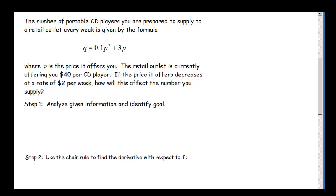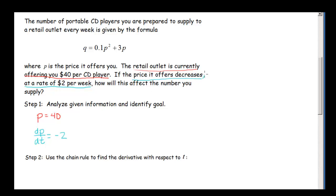The number of portable CD players you're prepared to supply a retail outlet every week is given by Q equals 0.1P squared plus 3P, where P is the price offered. The retail outlet is currently offering $40 per CD player — that tells us P equals 40. The price is decreasing at a rate of $2 per week. That's a rate of change: the rate P is changing with respect to time, which is negative 2. It's negative because of the word 'decreasing.'